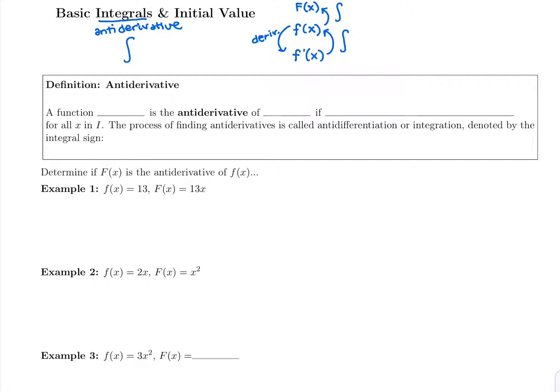To get back to the original function, going from capital F to lowercase f would be taking the derivative again. So we have this big picture with three different functions: the derivative of capital F is lowercase f, and the derivative of lowercase f is f prime. Now we're going to work the other way — from F prime to regular F, and all the way up to capital F if we took the antiderivative twice.